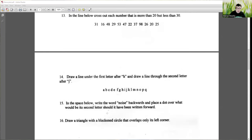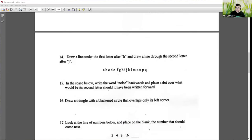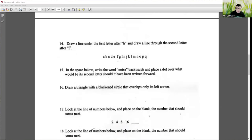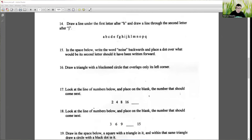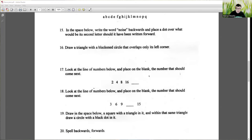Draw a line under the first letter after H and draw a line through the second letter after J. In the space below, write the word noise backwards and place a dot over what would be its second letter should it have been written forward. Number sixteen, draw a triangle with a blackened circle that overlaps only its left corner. And now they start to get remarkably silly, these questions. Look at the line of numbers below and place on the blank the number that should have come next. Look at the line of numbers below and place on the blank the number that should come next. Not too terrible, mind you, those two, but drawing the now we get really silly though.